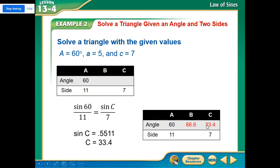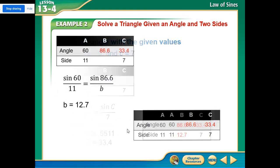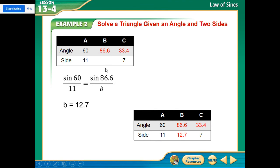Well, if I have 33.4, I know that's C. Well, now I can find B by subtracting from 180. Once I have that, I'm still missing side B, so now I plug it back into law of sines, the 60 over 11. And now I'm going to use the 86.6 over B. So 86.6 over B. Cross multiply and B equals 12.7. Fill in my chart, and that's what my answer is.